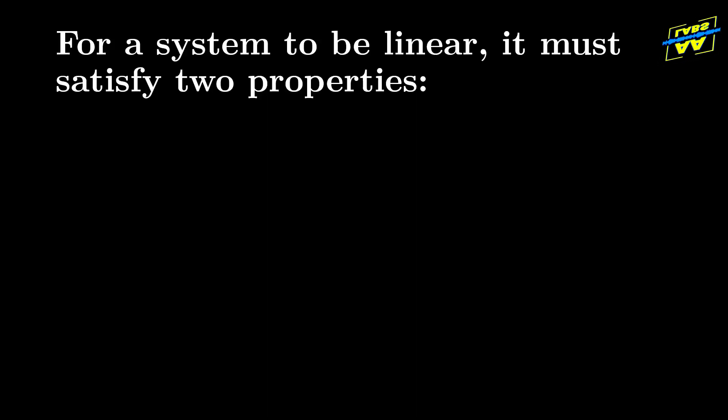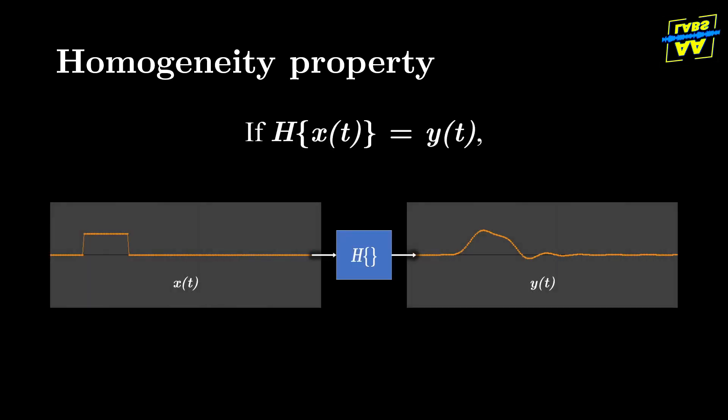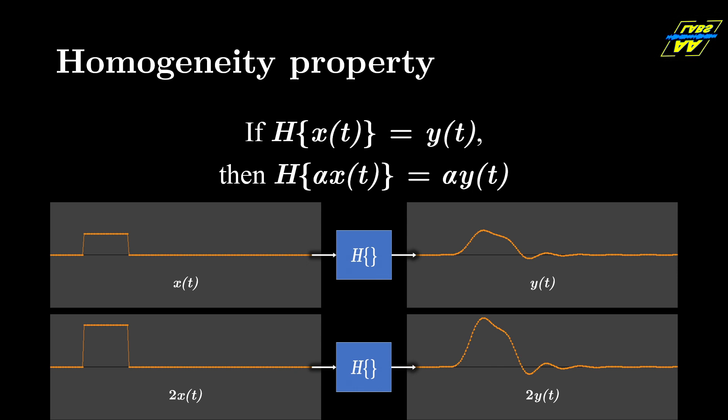For a system to be linear, it must satisfy two properties: homogeneity and additivity. The homogeneity property states that if we know an input x of t produces an output y of t, then if we scale the input x of t by some constant alpha, the output y of t will also be scaled by alpha.